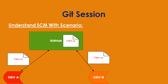Dev A created a file and placed it in GitHub. If Dev B also wants to work on the same file, Dev B does not need to ask Dev A for permission, because the file is already present in the central place called GitHub. Dev B pulls File1.cs from GitHub and makes modifications as per requirements.